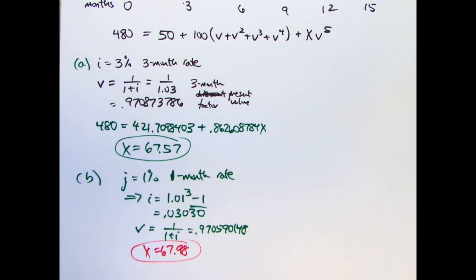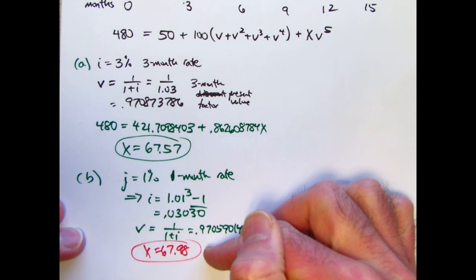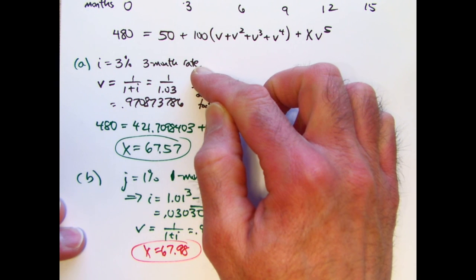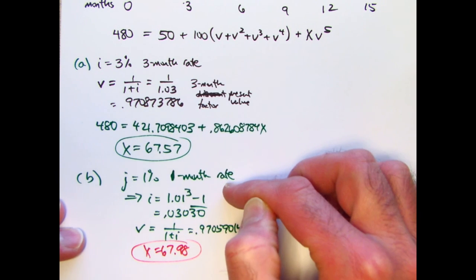I should also mention in finishing this problem that it should make sense that the answer to the second question is slightly bigger than the answer to the first question because a 3% three-month rate is Al earning less interest than a 1% one-month rate.